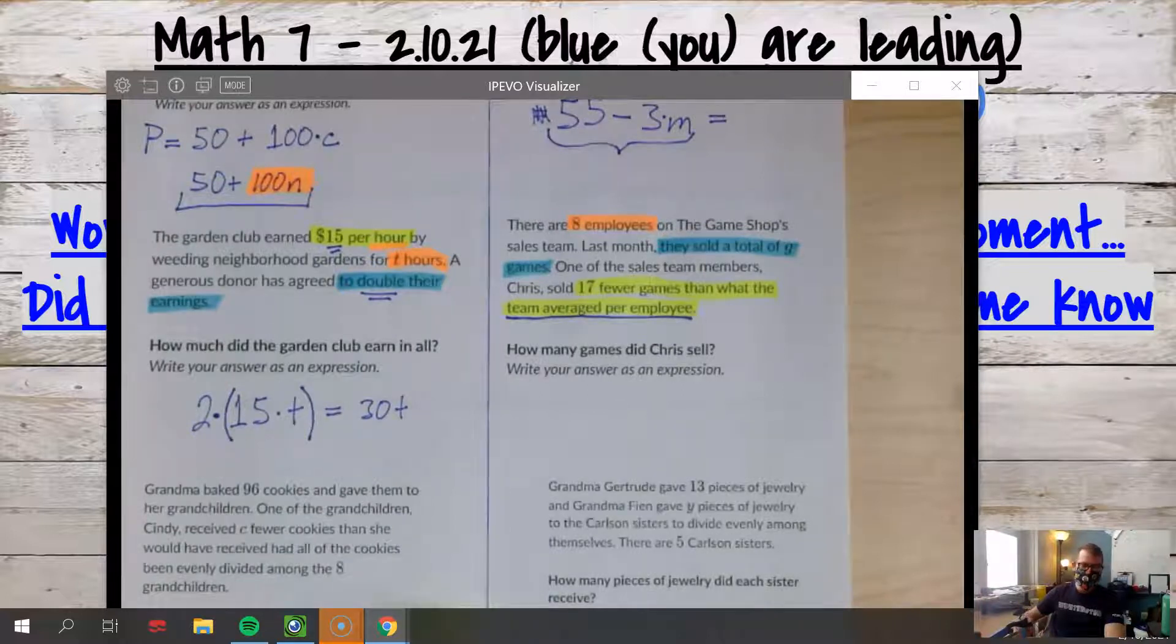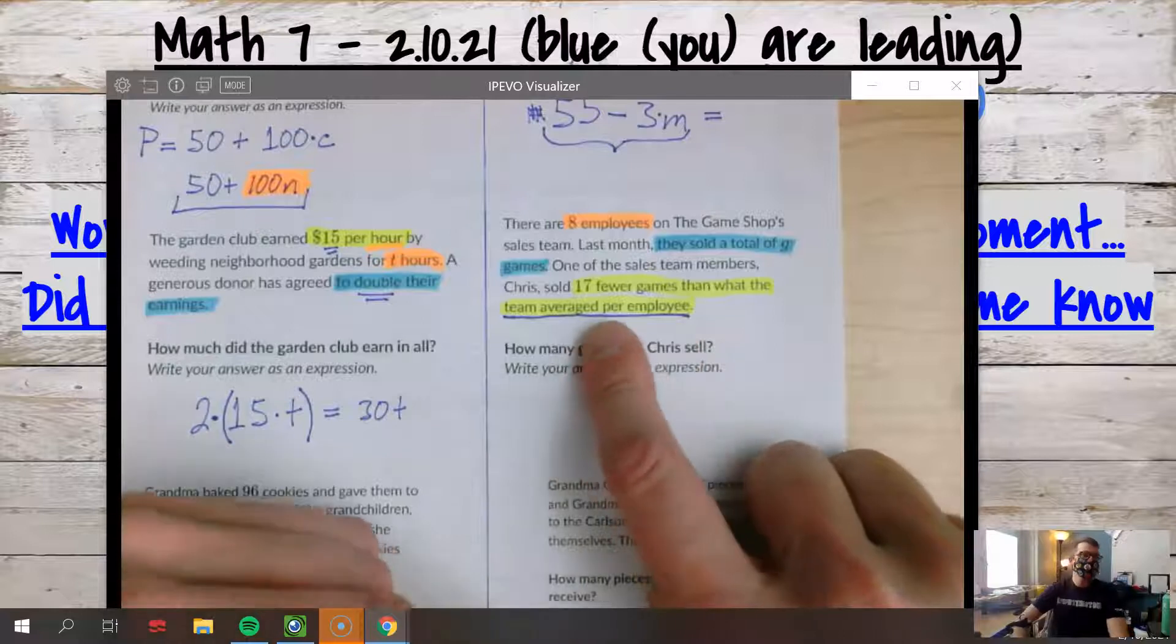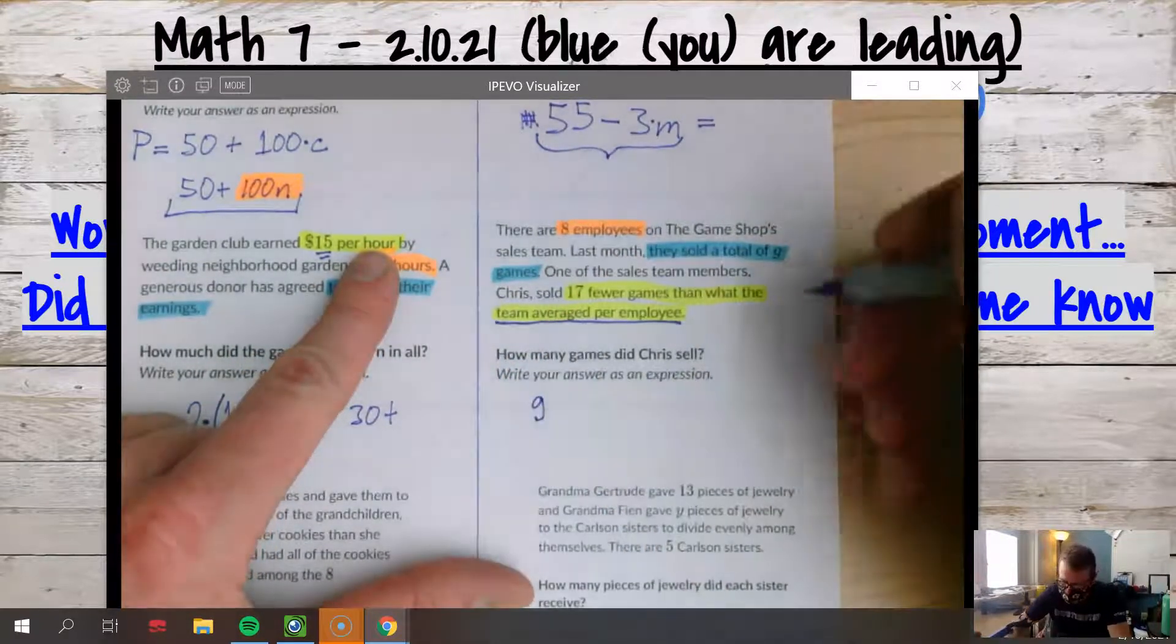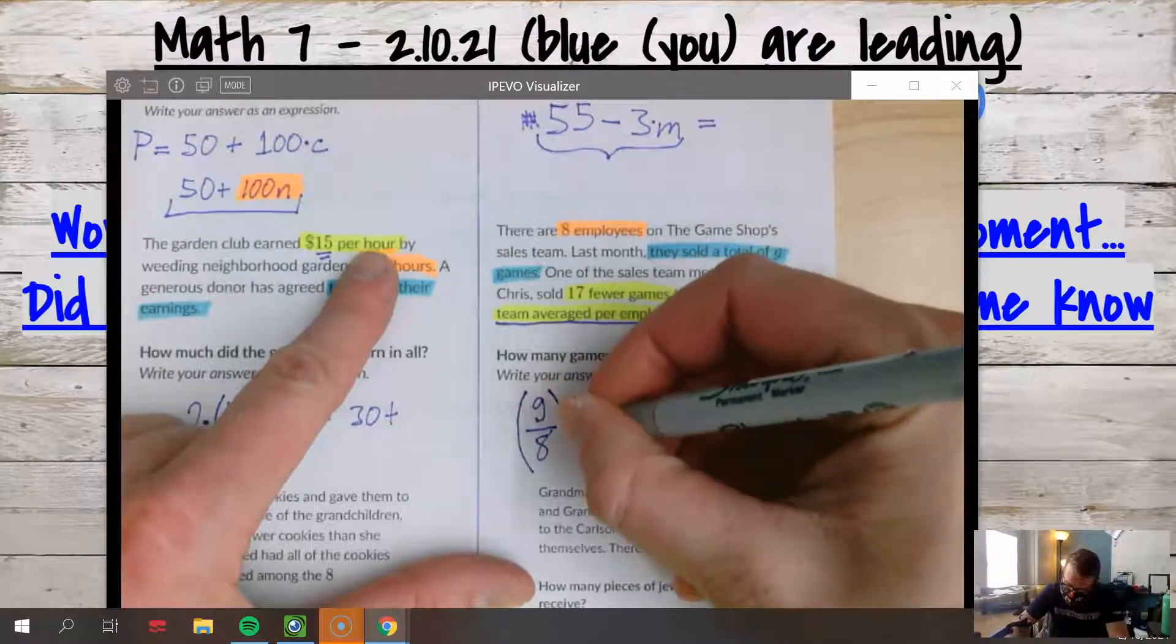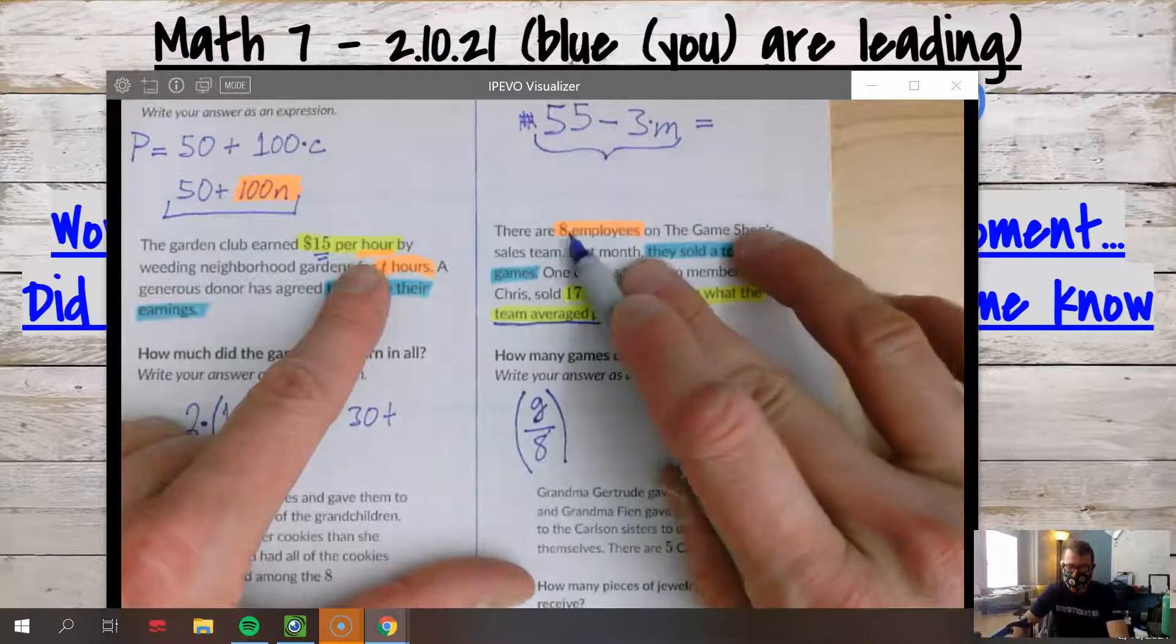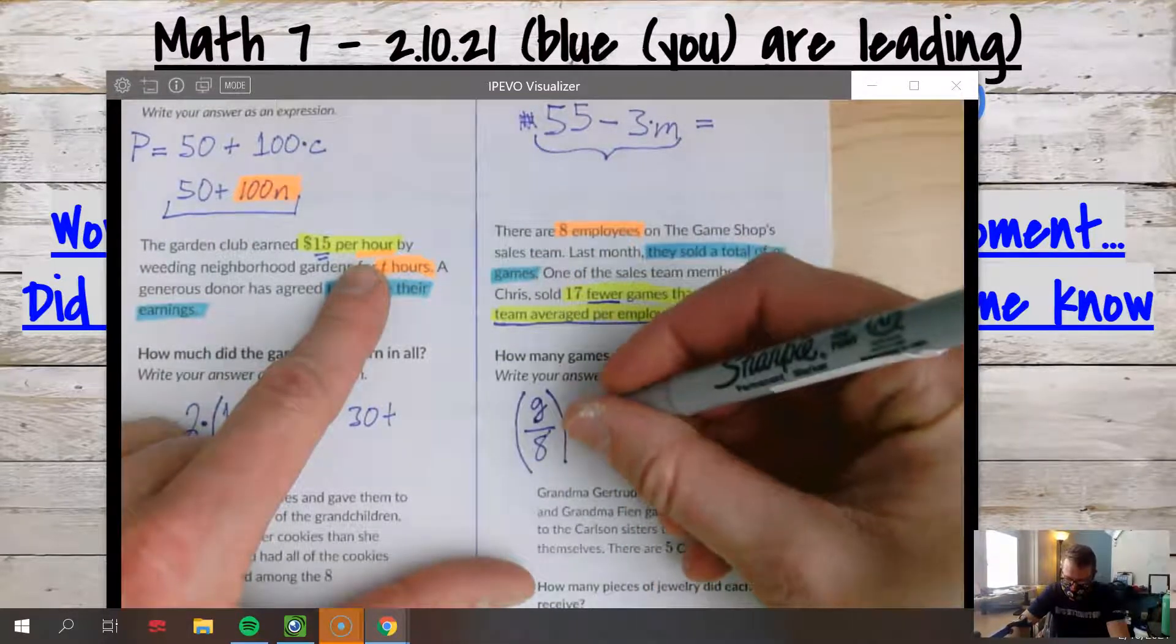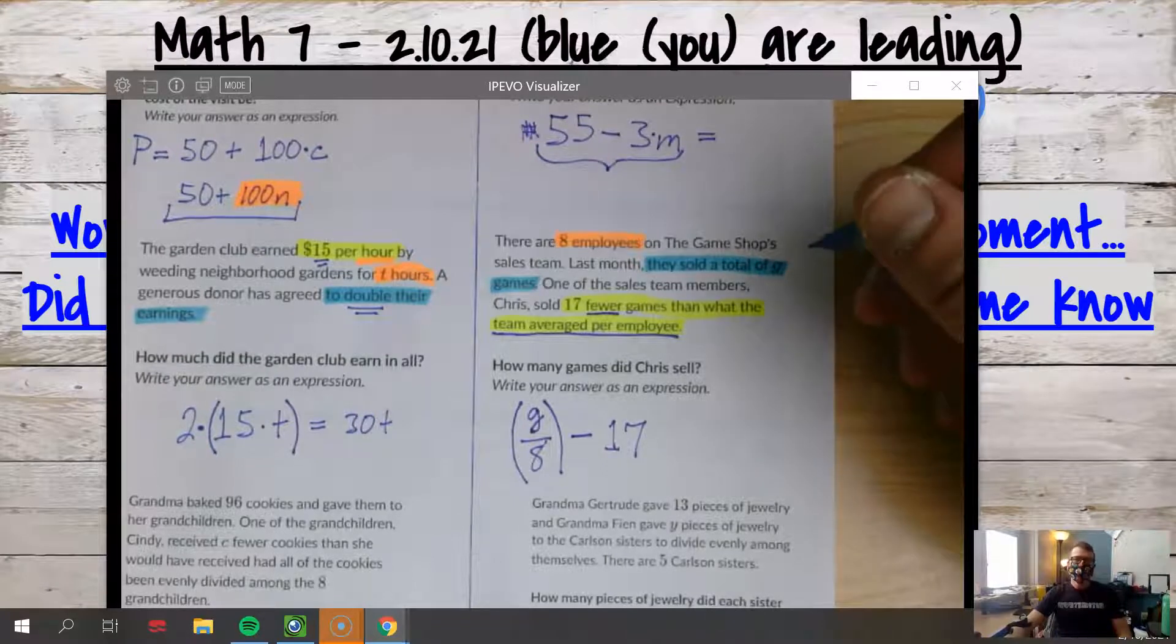So the 'averaged per employee' part - this is what throws this off. To average something, we take the entire amount that everyone sold together, divide that by how many people were doing the selling. And this G divided by 8 - sorry that my G looks, I don't even know what it looks like. I don't know if this would help. G divided by 8 is the average sold, because when you divide by how many people, that is the average. But then it's 17 fewer games, so we have to take away 17 from that average.